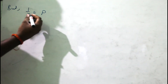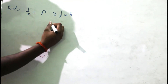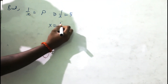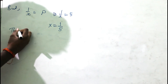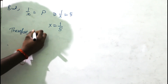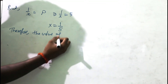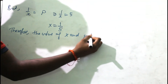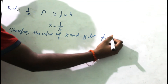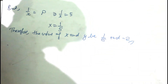Since 1/x = p = 5, it implies 1/x = 5, so x = 1/5. Therefore, the value of x and y are 1/5 and -2 respectively.